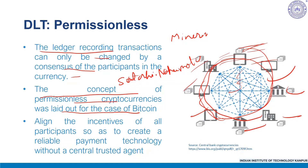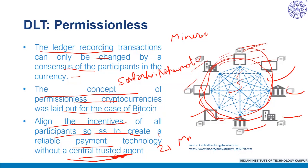Underlying this setup, the key feature is a set of rules — a protocol — that aims to align the incentives of all participants so as to create a reliable payment technology without a centralized trusted agent like a central bank. The protocol determines the supply of the asset to counter debasement — for example, in the case of Bitcoin, not more than 21 million Bitcoins can exist. The protocol is also designed to ensure that all participants follow these rules out of self-interest, yielding a self-sustaining endogenous equilibrium on blockchain transactions.